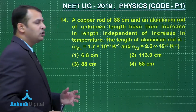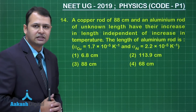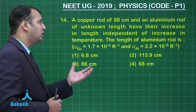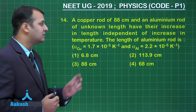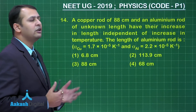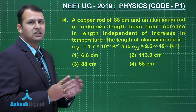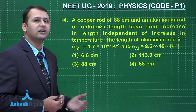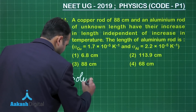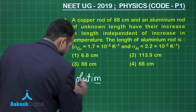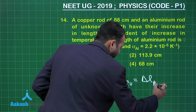Question 14 belongs to thermal properties of matter. A copper rod of 88 centimeters and an aluminum rod of unknown length have their increase in length independent of increase in temperature. The length of the aluminum rod is to be found. This combination works only when delta L of copper equals delta L of aluminum.